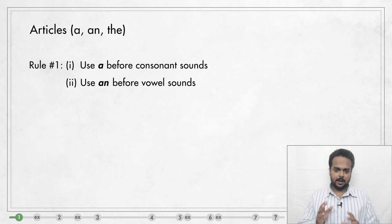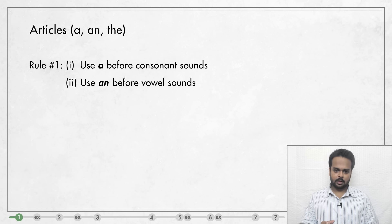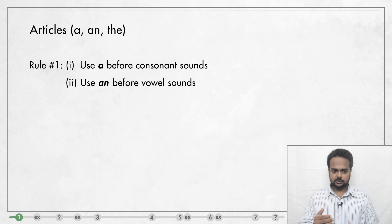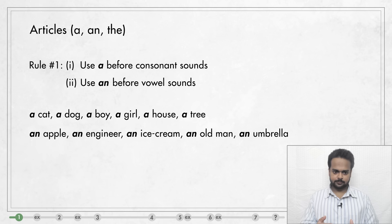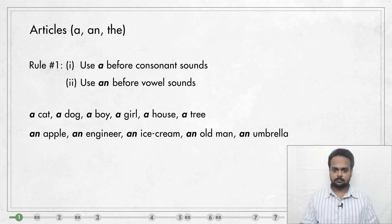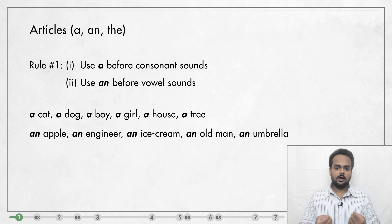So the first rule is about where to use A and where to use AN. Rule number one is: use A before a consonant sound and AN before a vowel sound. In all of these words, you see that they start with a consonant sound. Cat starts with K, dog starts with D, boy with B, girl with G, house with H and tree with T.